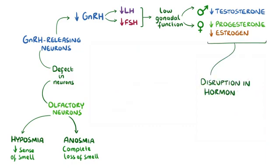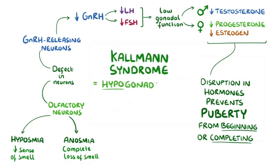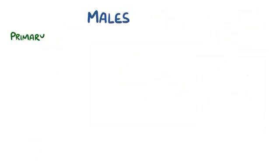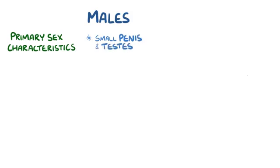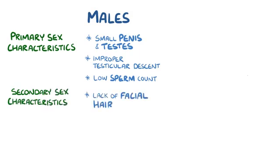The disruption in hormones prevents puberty from beginning or successfully completing. Because of this, Kallmann syndrome is a type of hypogonadotropic hypogonadism disorder. In Kallmann syndrome, there's an underdevelopment of primary and secondary sex characteristics. In males, primary sex characteristic dysfunction includes having a small penis and testes, improper testicular descent, and a low sperm count. Secondary sex characteristic dysfunction includes a lack of facial hair, low muscle mass, and not developing a deep voice.